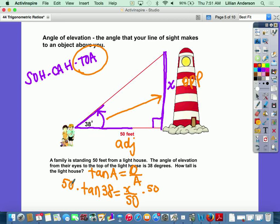So to solve for x, all we have to do is multiply both sides by 50, and we'll find our answer. So we'll have 50 times the tangent of 38 degrees equals the height of the lighthouse. We go to our calculator and we type it exactly how we see it: 50 times the tangent of 38, close parentheses, and we'll get 39.1, about 39.1 feet. That's how tall the lighthouse is.